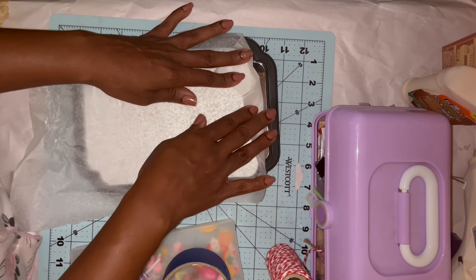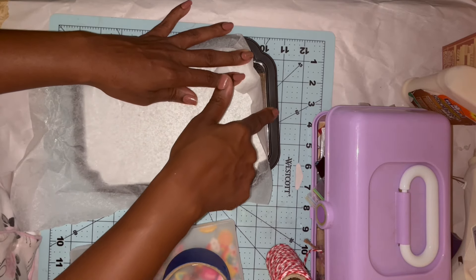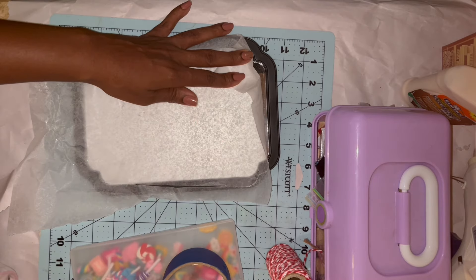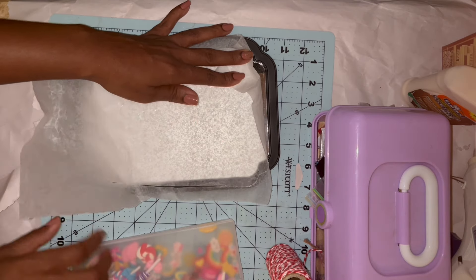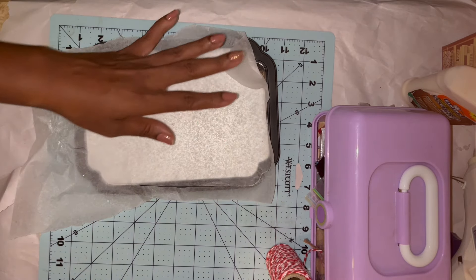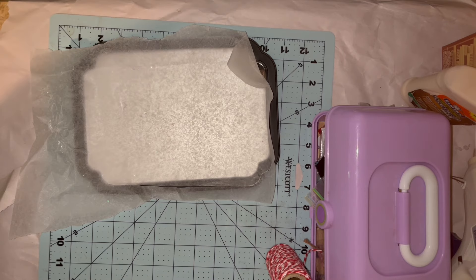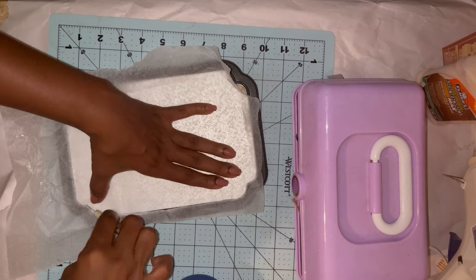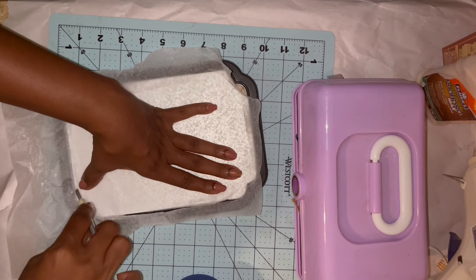So I'm going to start by just cutting around my wax paper so I can have this fit perfectly onto the mirror. So once I start to add all of my embellishments, there really won't be so much of a glare.